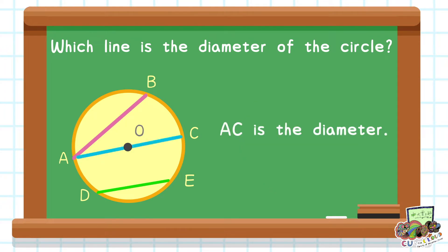Line AC is the diameter of the circle because only line AC passes through the center O.